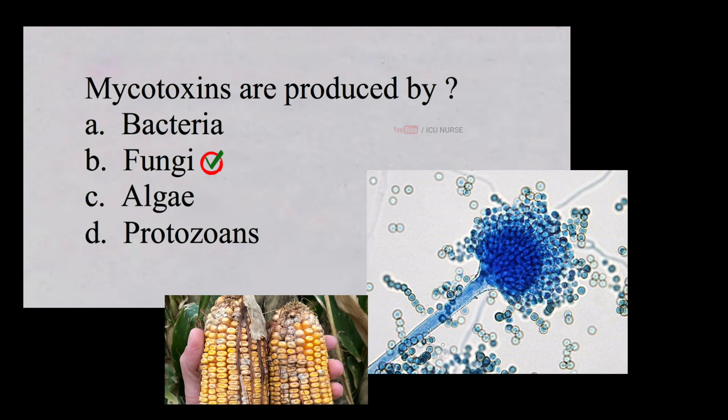Mycotoxins are toxic secondary metabolites produced by certain types of fungi. These fungi can grow on many foodstuffs including cereals, dried fruits, nuts and spices. Tiny amounts of mycotoxins in food or feed can be dangerously toxic, threatening both human and animal health.